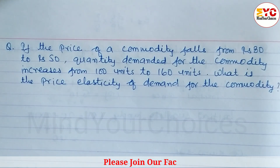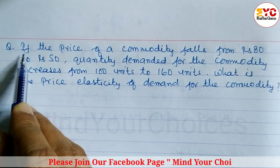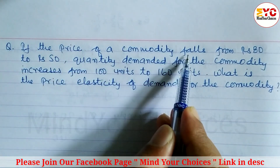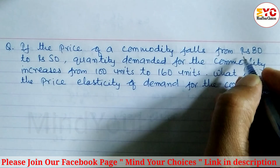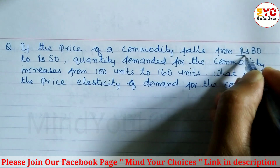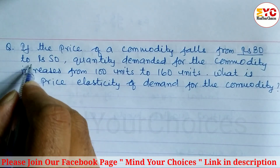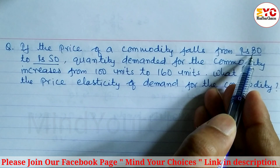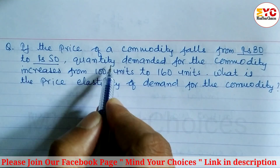This question is taken from elasticity of demand and supply. If the price of a commodity falls from Rs. 80 to Rs. 50 — Rs. 80 is the initial price and Rs. 50 is the new price.